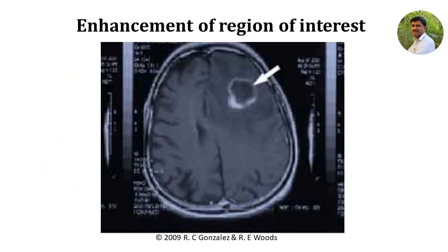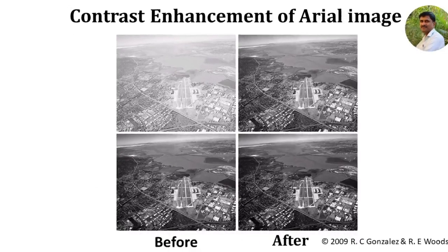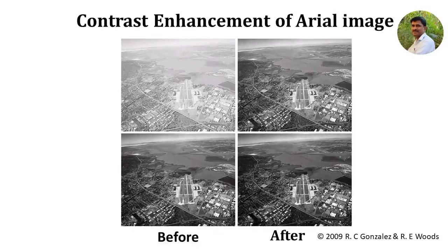In certain applications like identification of the severity of a brain tumor, the tumor area or the region of interest is required to be enhanced using local methods. Here in the first column, you are seeing two aerial images captured remotely using satellites. They have low contrast. After contrast enhancement, we can observe more details in the images.